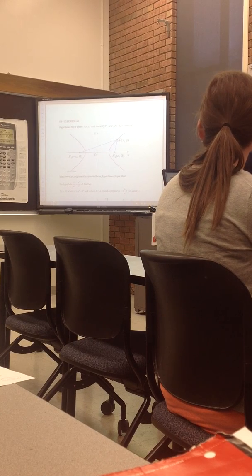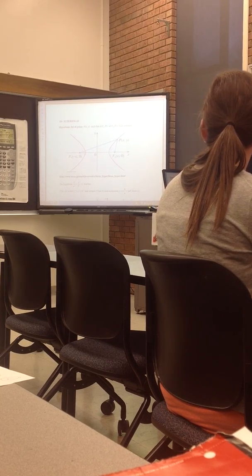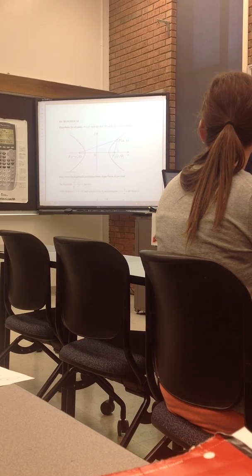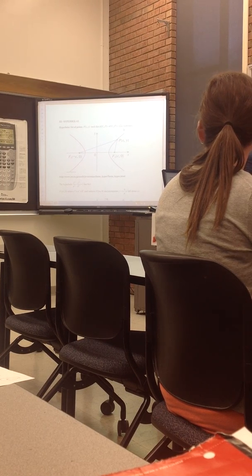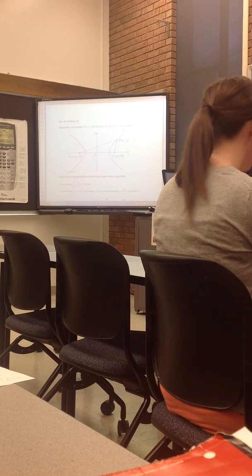At any point on that hyperbola, if I take the distance f1p and I subtract that distance f2p, it's always also a constant. Positive 2a minus 2a. So that's how you draw a hyperbola.